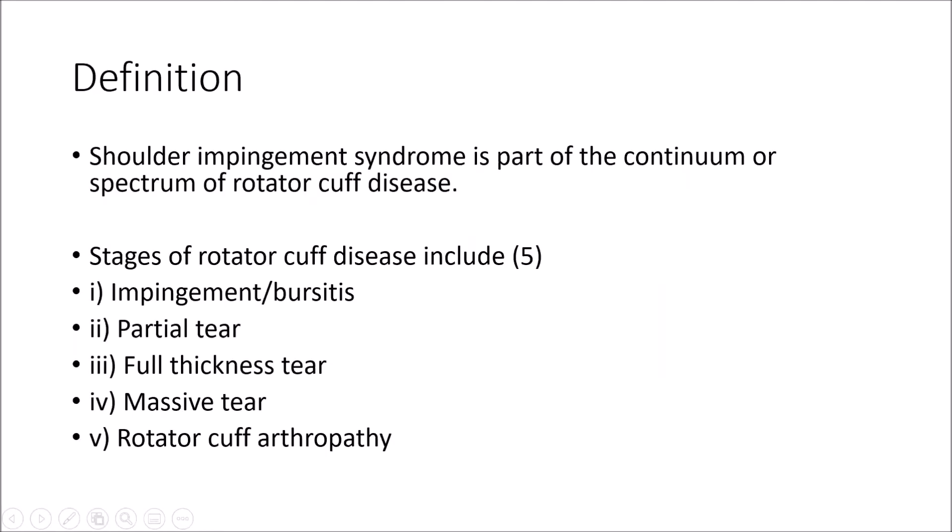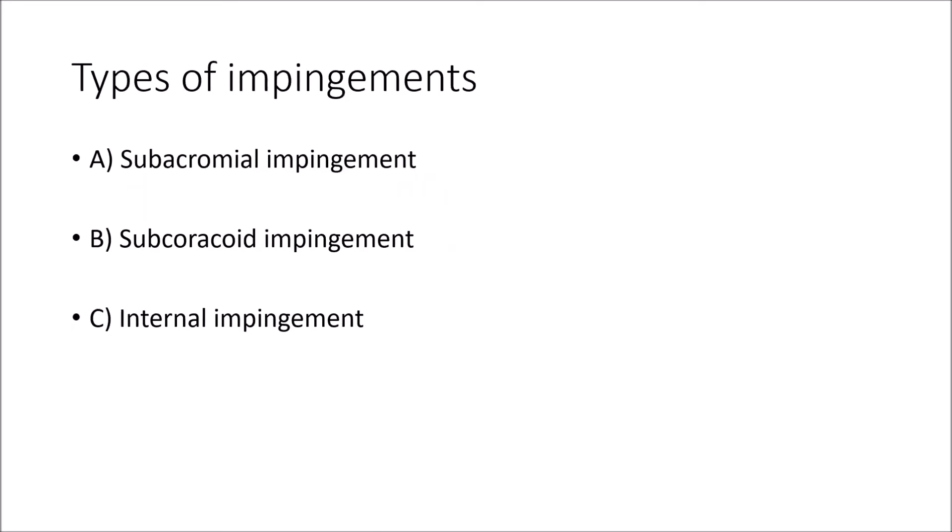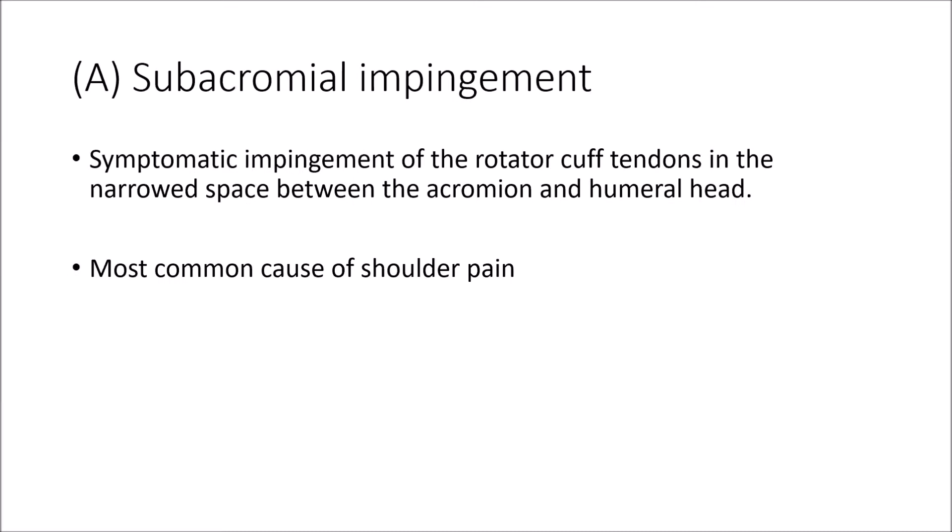We start with the definition. Shoulder impingement syndrome is part of the continuum or spectrum of rotator cuff disease. Rotator cuff disease can be divided into five stages: impingement or bursitis, partial tear, full thickness tear, massive tear, and rotator cuff arthropathy. There are three types of impingement: the most common is subacromial impingement, followed by subcoracoid impingement and internal impingement. Subacromial impingement is a symptomatic impingement of the rotator cuff tendon in the narrow space between the acromion and the humeral head — it is the most common cause of shoulder pain.